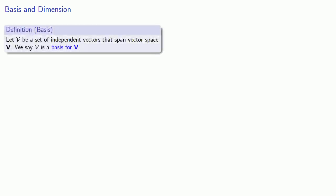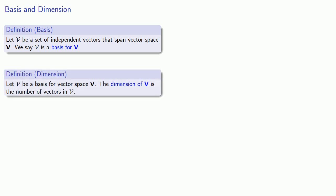This leads to two other definitions. If I have a set of independent vectors that span the vector space, we'll say that we have a basis for our vector space. Mathematicians like to count, so the next important definition is that of dimension. The dimension of the vector space is the number of vectors in my basis.